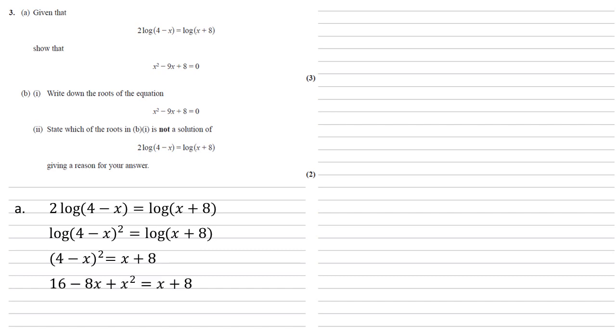Squaring the left hand side gives us 16 - 8x + x², and then subtracting the x and the 8 from both sides gives us x² - 9x + 8 equals 0, as required.